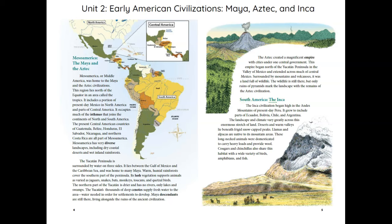South America: The Inca. The Inca civilization began high in the Andes Mountains of present-day Peru. It grew to include parts of Ecuador, Bolivia, Chile, and Argentina. The landscape and climate vary greatly across this enormous stretch of land. Deserts and warm valleys lie beneath frigid, snow-capped peaks. Llamas and alpacas are native to its mountain areas and were domesticated to carry heavy loads and provide wool. Cougars and chinchillas also share this habitat with a wide variety of birds, amphibians, and fish.